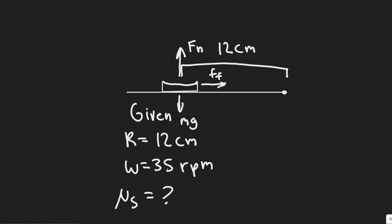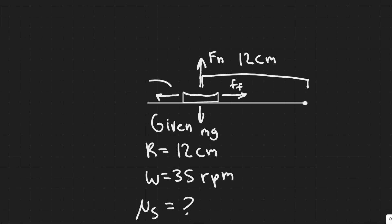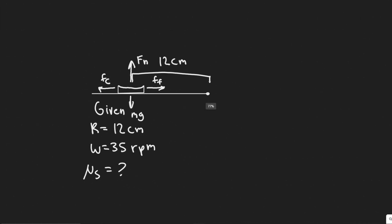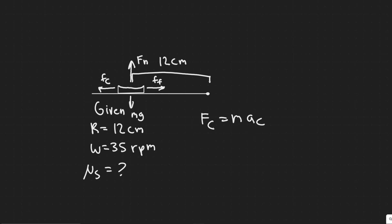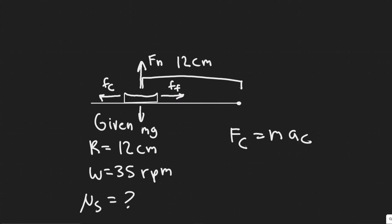You should know what centripetal force is — when something spins, it pulls you inward. We also have centrifugal force, which points outwards, and it's basically equal in magnitude to the centripetal force. We call this F_c. This is the force that effectively pulls the coin off. F_c equals M times the centripetal acceleration A_c. The greater we spin the turntable, the greater this force will be.